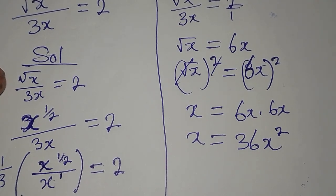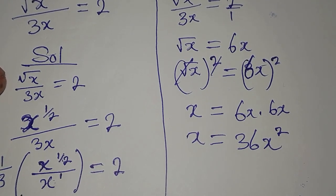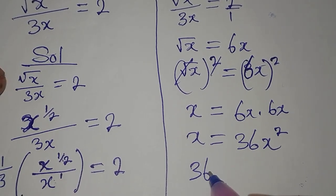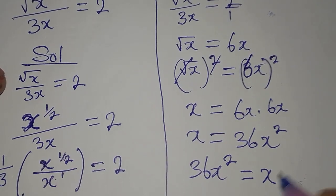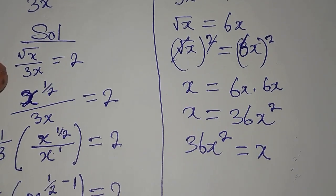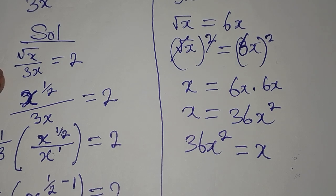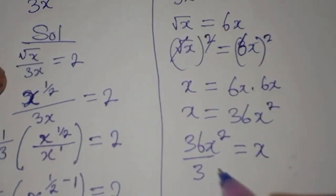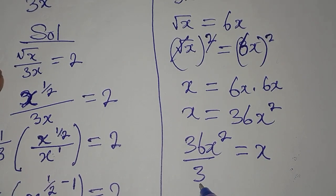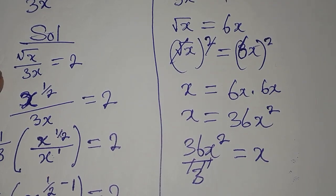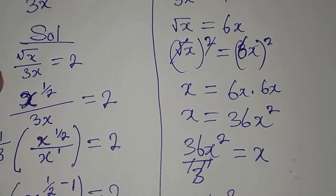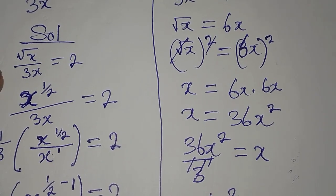We are expected to write the one with the higher power first. So 36x squared will be written first, and it's equal to x. Do not divide both sides by x. What do you do? 36x squared minus x equals 0.